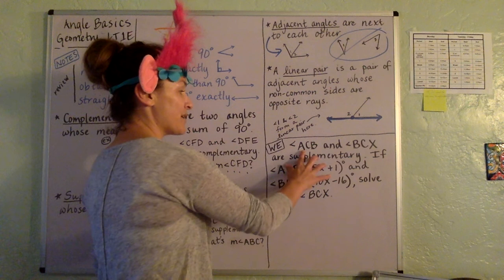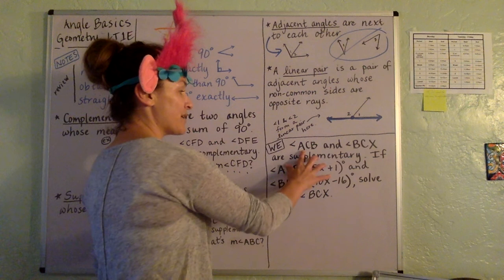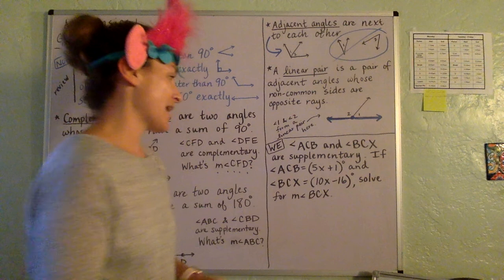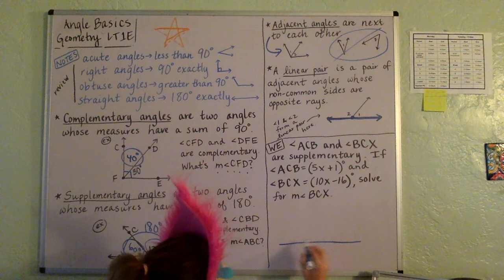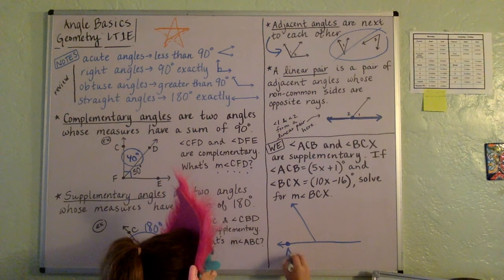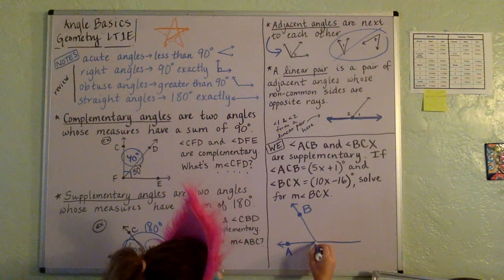We've got a situation going on here. We know that ACB and BCX are supplementary. So let's see if we can start to put together this picture here. So let's see. So ACB, I'm going to kind of configure it this way. ACB is an angle. And then B to C to X.